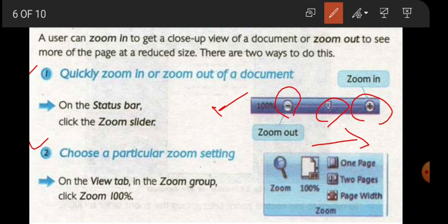There is another way to do this — we can do it with the zoom settings. For that we have to go to the View tab which is on the top ribbon tabs. There is Home, Insert, and then the View tab. We will click it and there are groups inside the ribbon. In the Zoom group, click the 100% button — that will set it to the normal size.